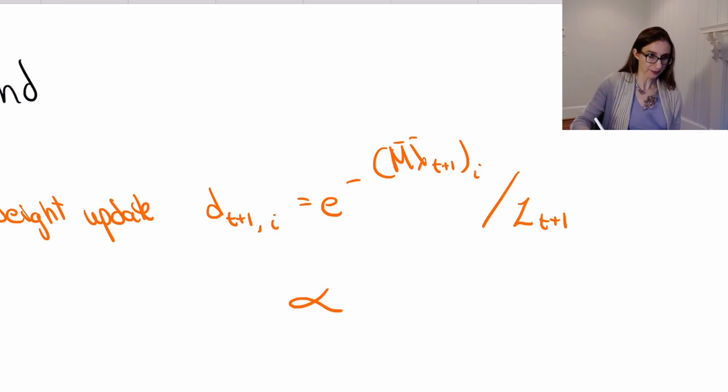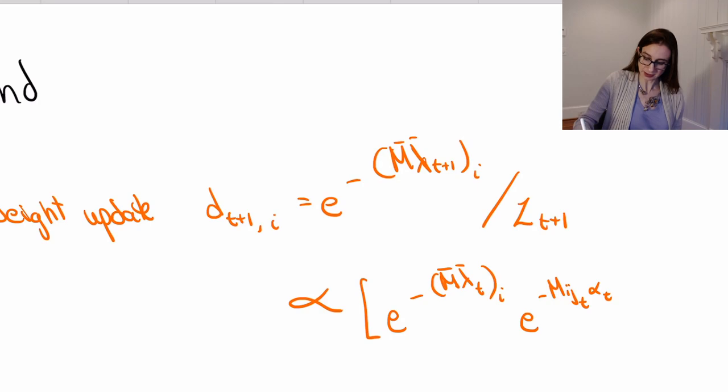This thing is proportional to lambda t+1,i. And remember what lambda t+1,i is—it's lambda t plus alpha t in the jt direction. So let's write that out. It's proportional to e to the negative m lambda t,i and then e to the negative m i jt alpha t. So that's the previous lambda t there, and then when I added alpha t to the jt direction, that means I have this term there.